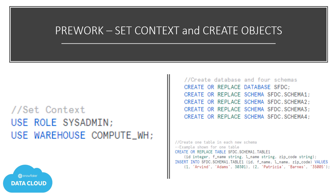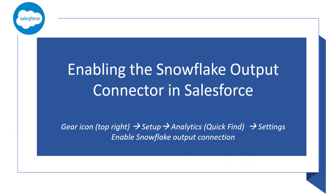Here we are creating the Snowflake objects that we need. We've created one database with four different schemas and then one table within each schema. We'll be creating three connectors in Salesforce Analytics Studio. The fourth service account is created so that you can create a new Snowflake connection yourself after following along with me to create the three different connectors. Once you've finished your pre-work in Snowflake, be sure to log into Salesforce. You'll first want to enable the Snowflake output connector in Salesforce by following these directions.